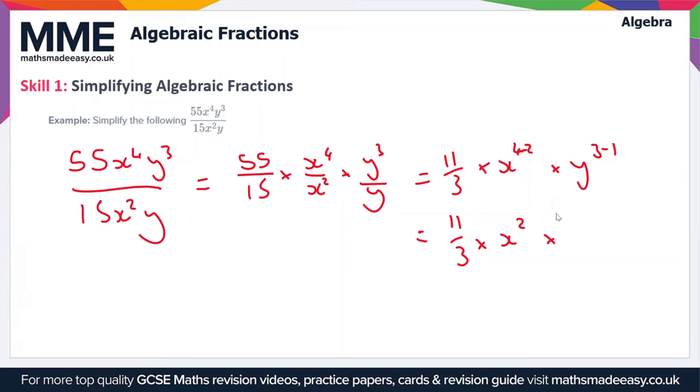whoops, that shouldn't be an x, that should be a y, times y squared. So all that's left is to just multiply these all together again. We get 11x squared y squared over 3. So this fraction is now in its simplest form.